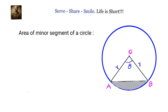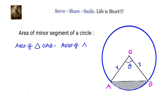Area of minor segment of a circle equals area of sector OAB minus area of triangle OAB.